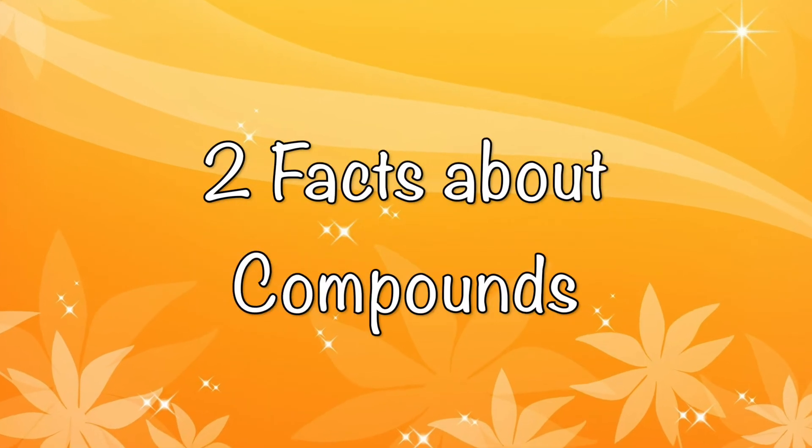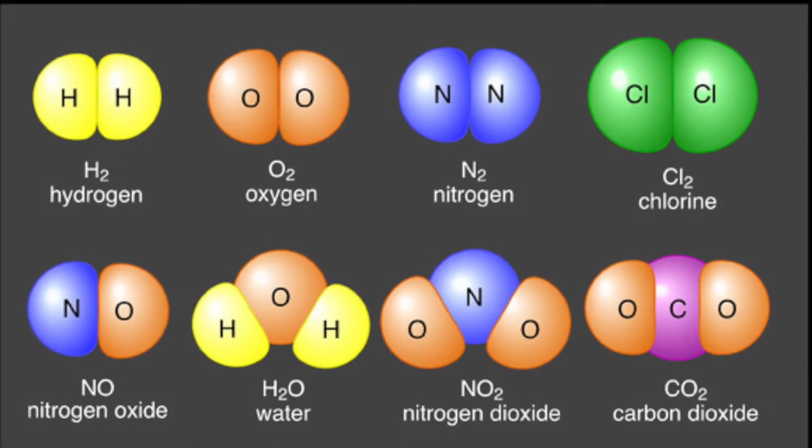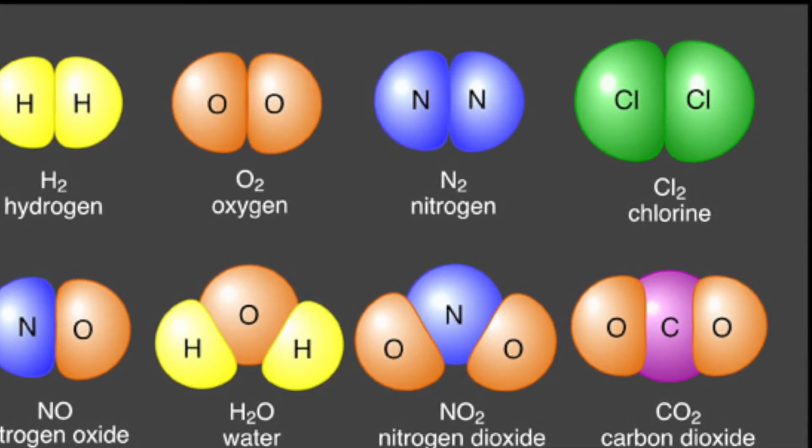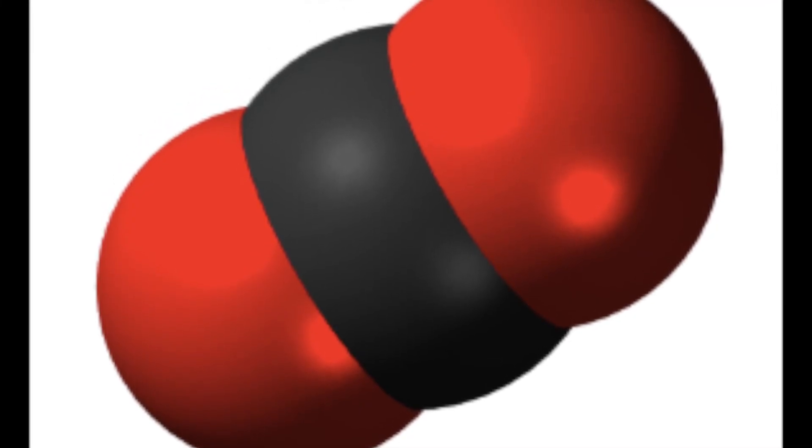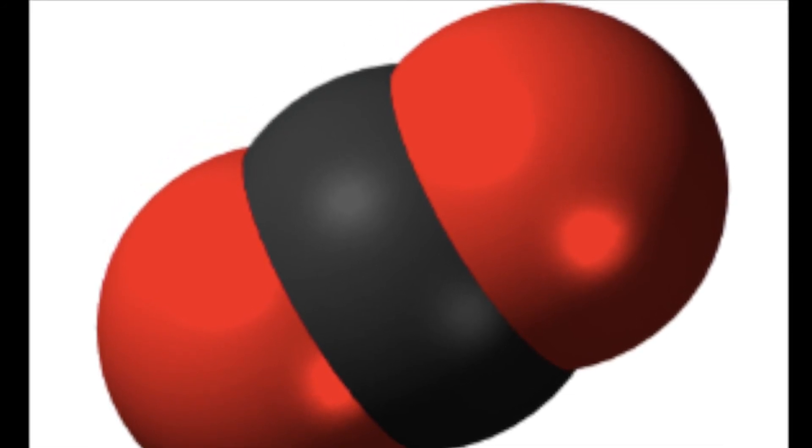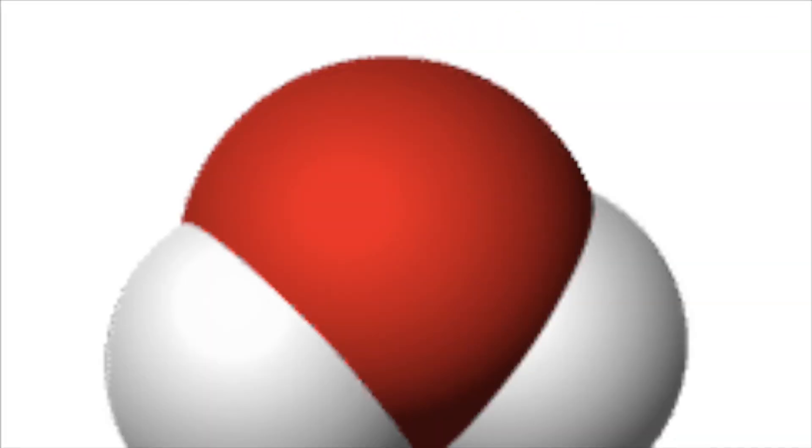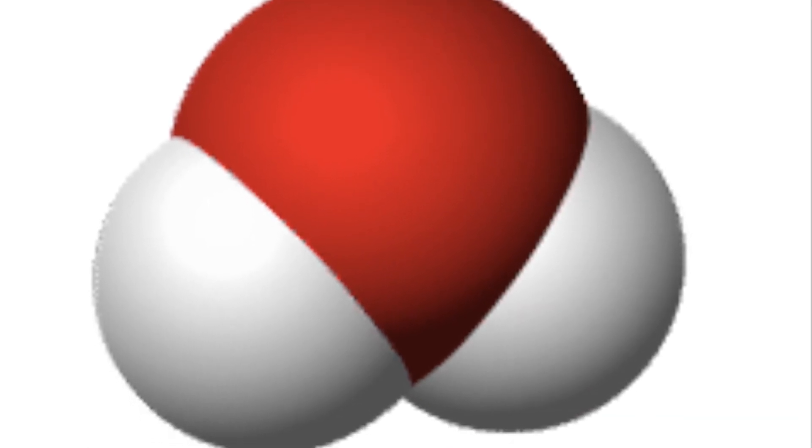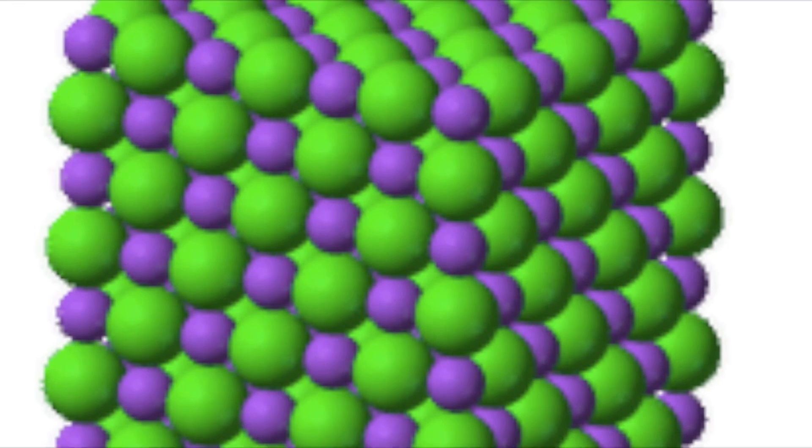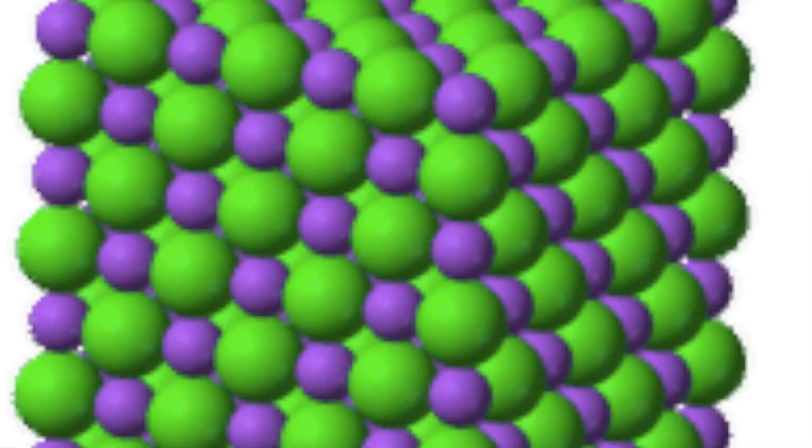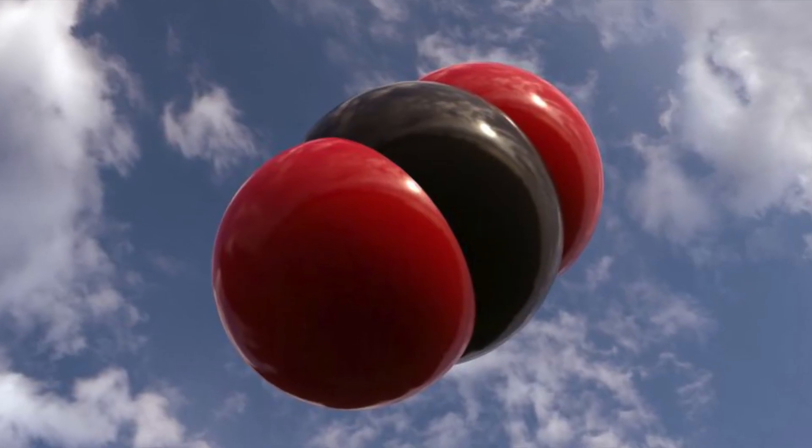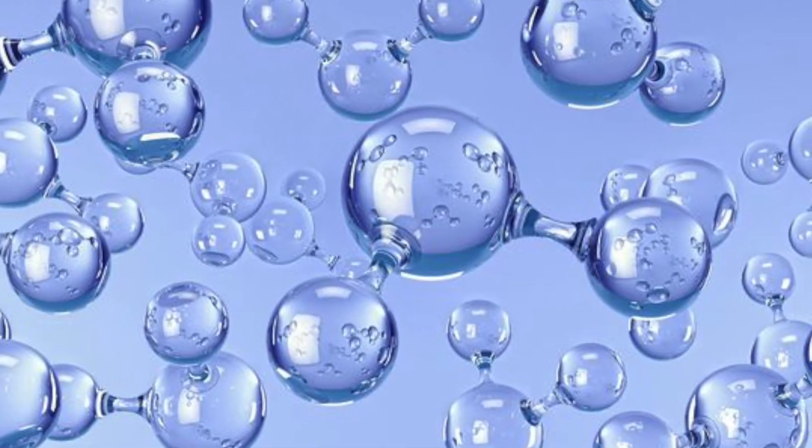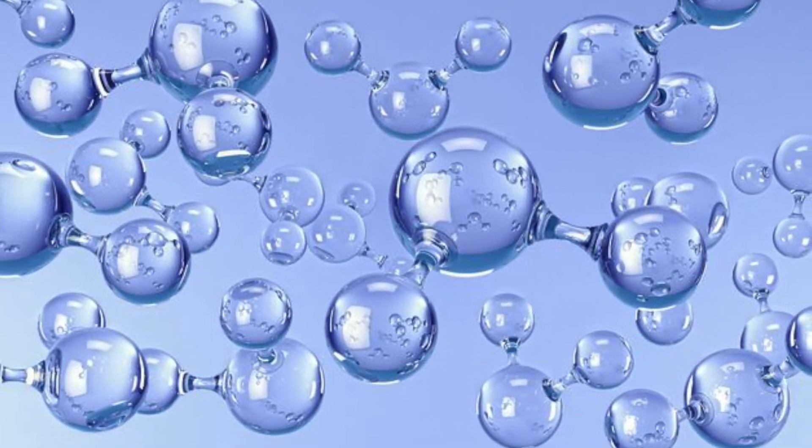Two things are true of all compounds. A compound always has the same elements in the same proportions. For example, carbon dioxide always has two atoms of oxygen for each atom of carbon, and water always has two atoms of hydrogen for each atom of oxygen. A compound always has the same composition throughout. For example, all carbon dioxide in the atmosphere and all water in the ocean have these same proportions of elements.